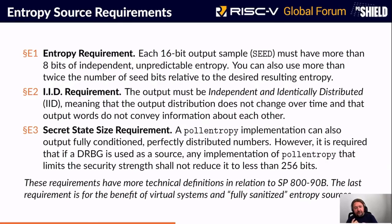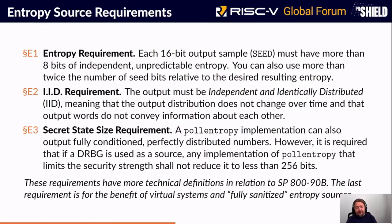There is an entropy requirement: each 16-bit output sample should have at least 8 bits of independent, unpredictable entropy. We require independent and identically distributed output, which simplifies certification and prevents issues where different processes pull from the same interface based on shared secrets. For virtual environments, the output can be fully random, and in that case we set a minimum security level of 256 bits. That's also what you'd do if you have an enclave and don't want to leak the properties or signature of the hardware generator — you sanitize it using a DRBG on the other side of the ISA. These requirements are minimum requirements to have a workable solution on embedded targets.